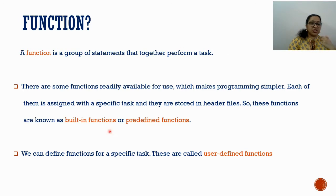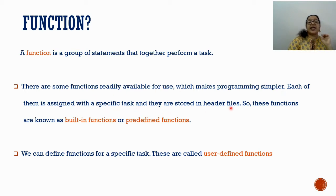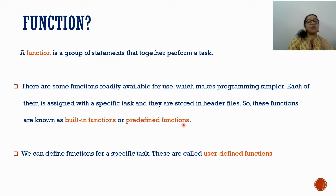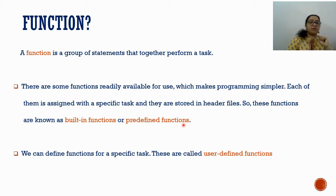There are two types of functions. The first type: there are some functions readily available for use, which makes programming simpler. Each of them is assigned a specific task and they are stored in header files — already defined in the library. We can use these functions in our programs. These are known as built-in functions or predefined functions.